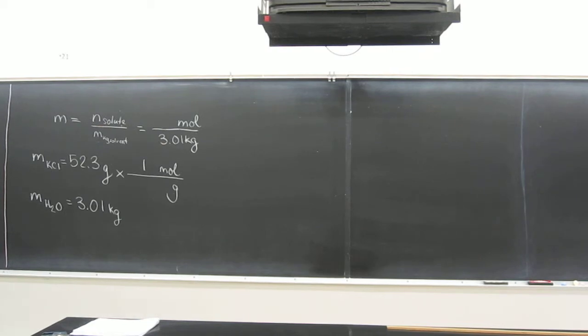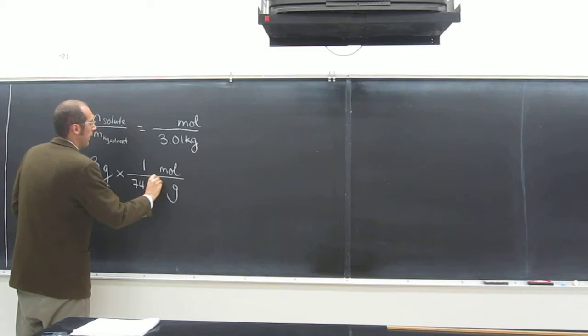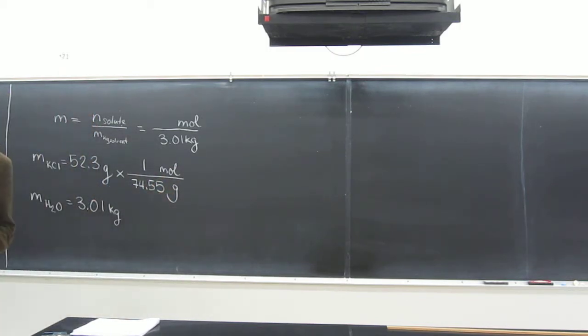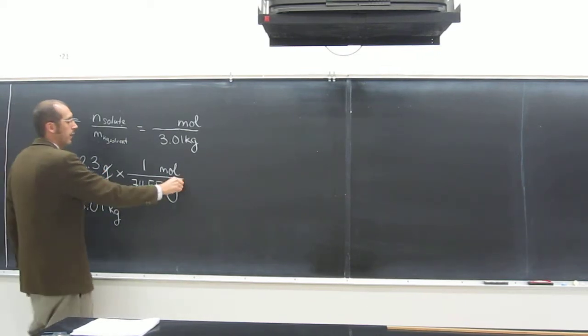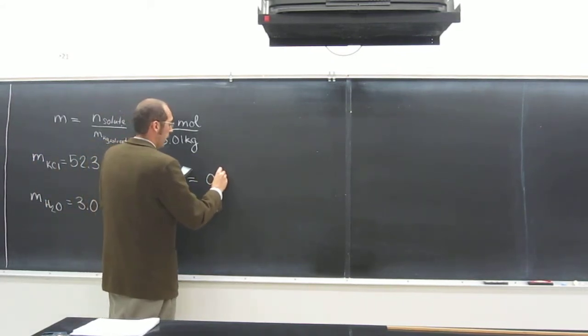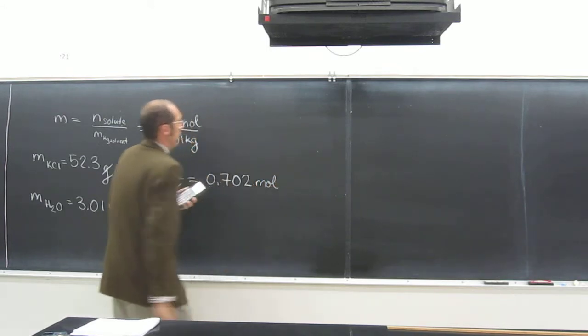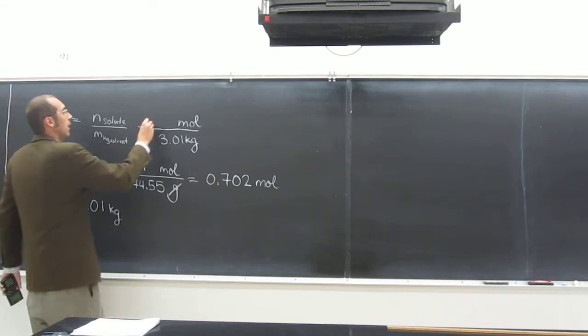And how do we figure out the molar mass? Well, we look at the periodic table, and we look at the atomic weights of these things. So potassium is 39.10, and chlorine is 35.45. We add those two things up, and we get 74.55 grams of potassium chloride per mole of potassium chloride. So we can cancel out grams there, and that's going to give us the number of moles of potassium chloride. So we just do 52.3 divided by 74.55, and the number of moles, 0.702 moles, because it's the three sig figs.